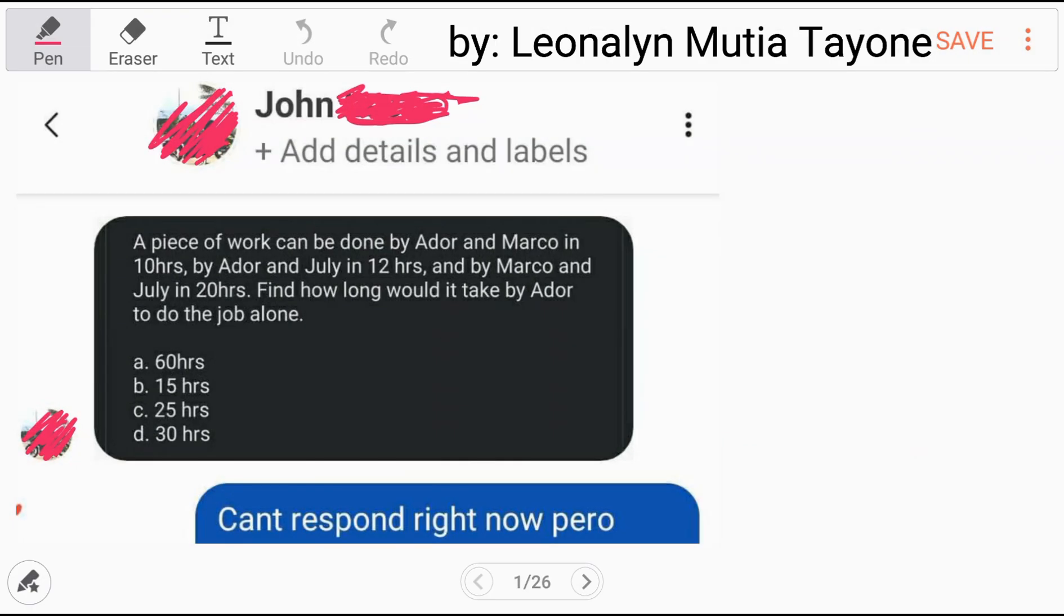Welcome to our YouTube channel, Solving Math with Leonalyn. Now, let's answer a question from one of our followers. Let's read this first. A piece of work can be done by Adore and Marco in 10 hours, Adore and Julai in 12 hours, and by Marco and Julai in 20 hours. Find how long would it take by Adore to do the job alone.